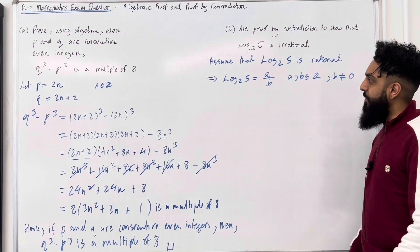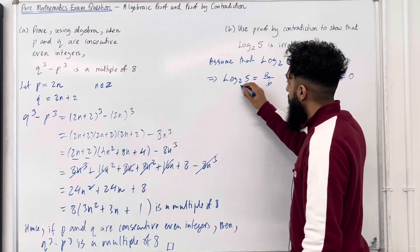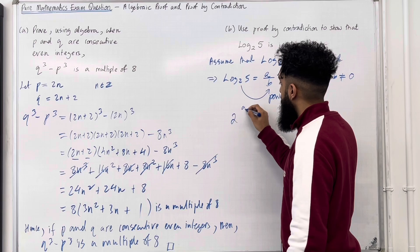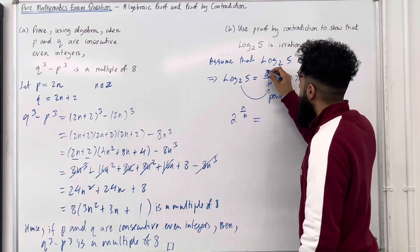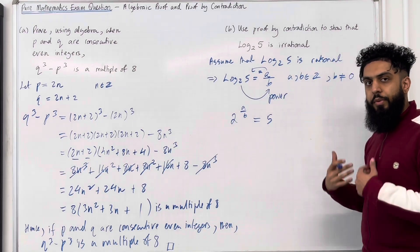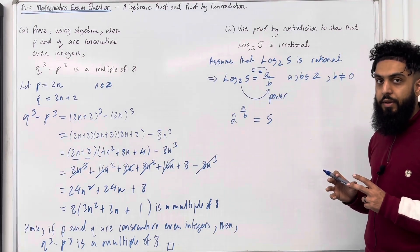Now we can rewrite this using exponential form. So we've got base 2, we can raise it to the power A over B, and we can set it equal to what we have inside the logarithm, which is 5. So I must continue with the proof until I arrive at a contradiction.